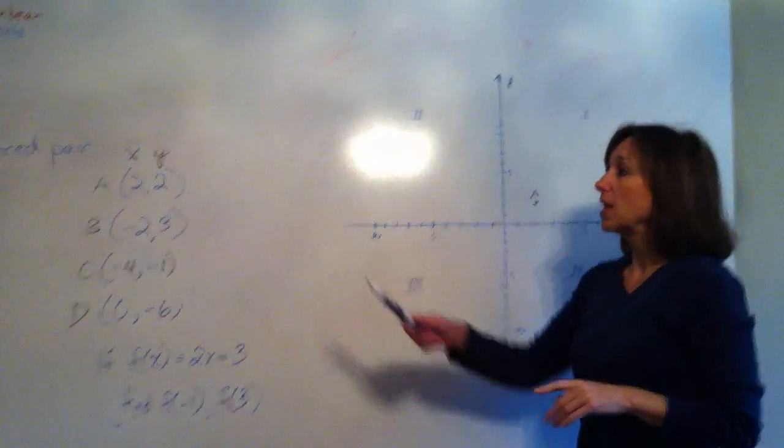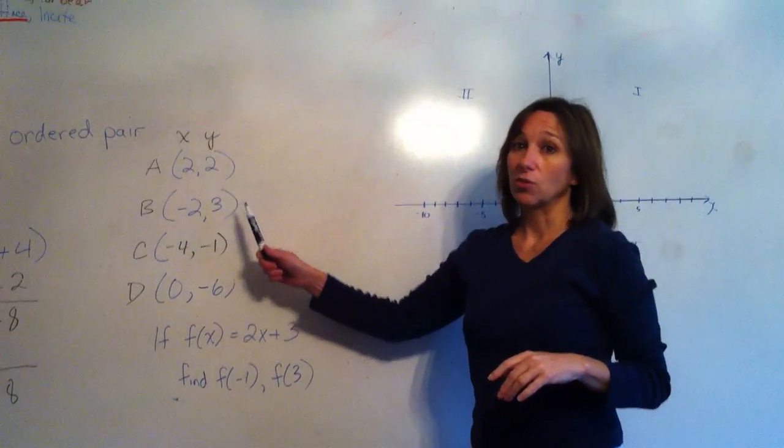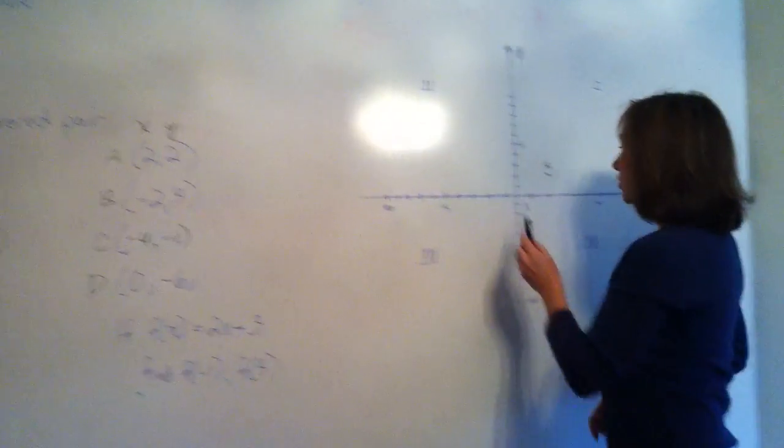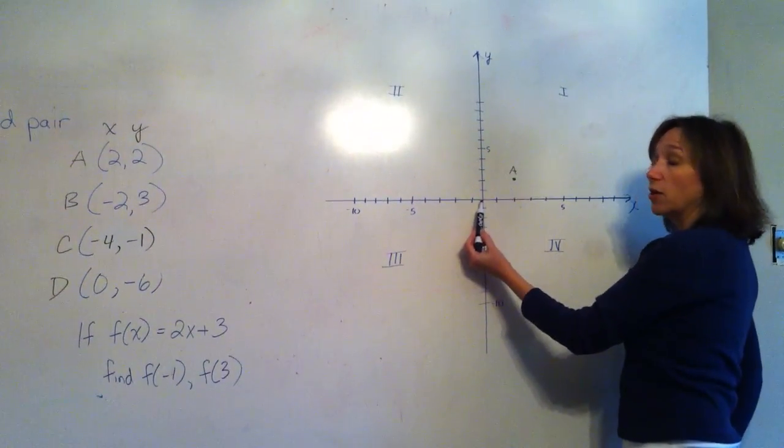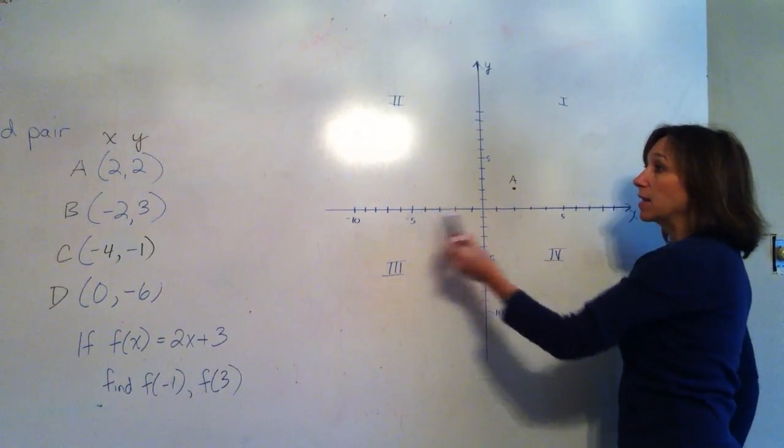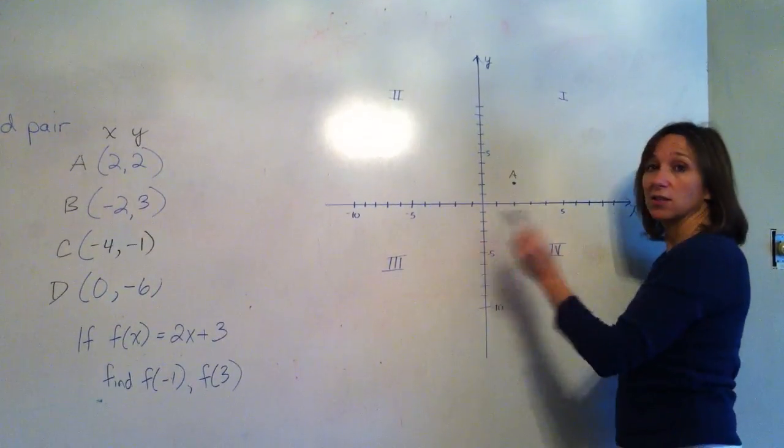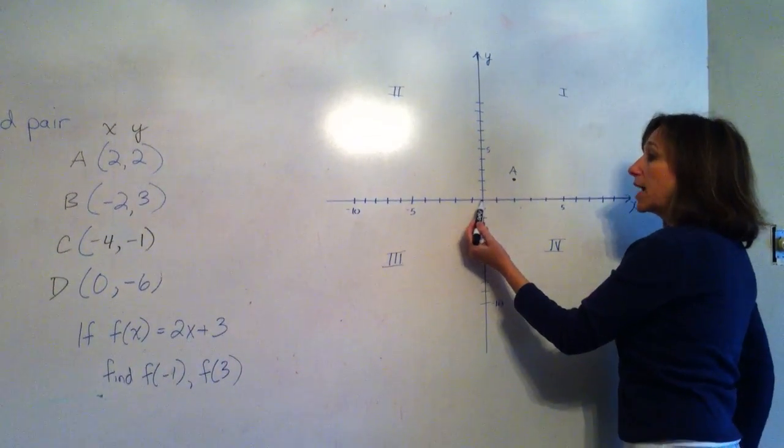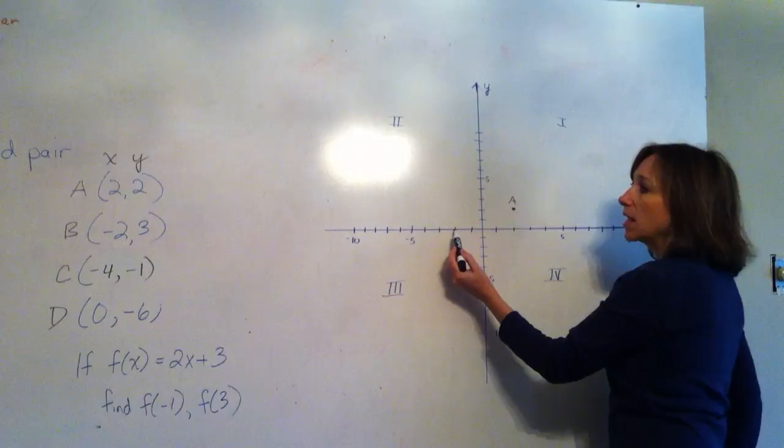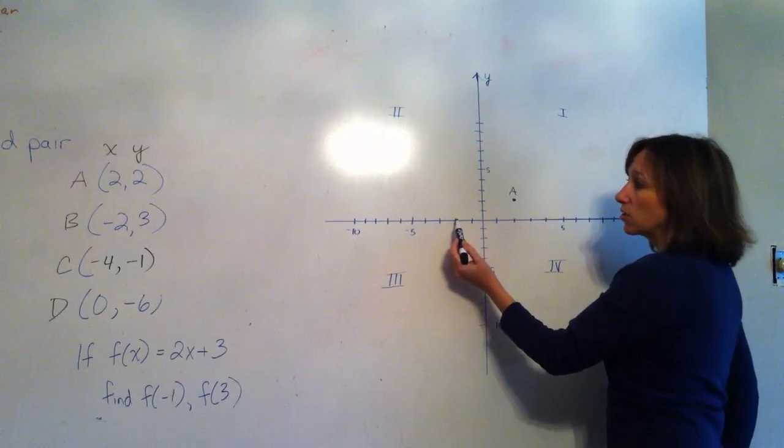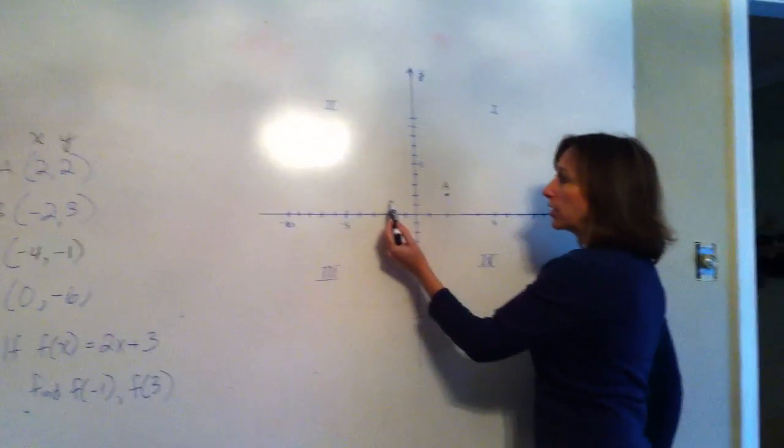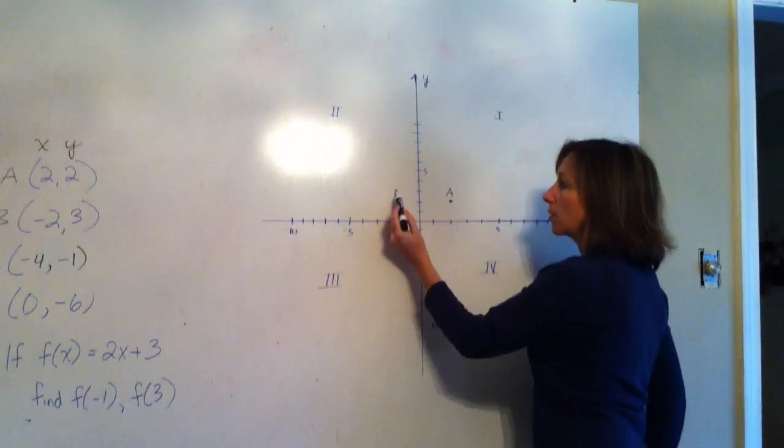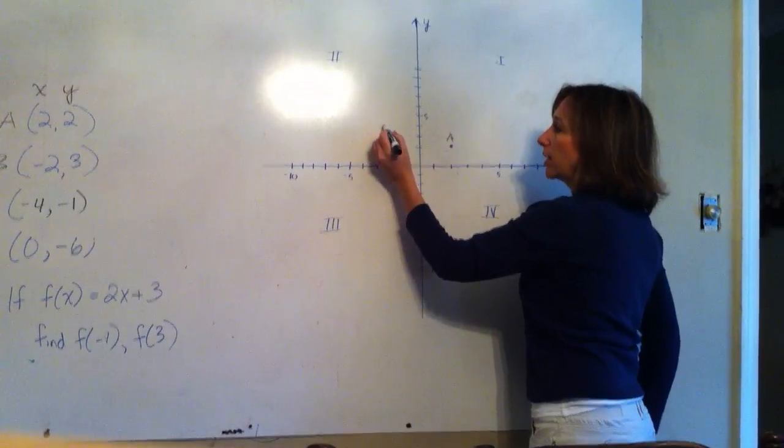Let's try the next one. B is (-2, 3). So we do the same thing. We start in the center. We'll go on the x-axis first. Remember, x comes before y. So we would go -2, which is 1, 2 to the left. And the y-coordinate is 3. So from this point, we go up 3: 1, 2, 3. And we put our point and label it B.